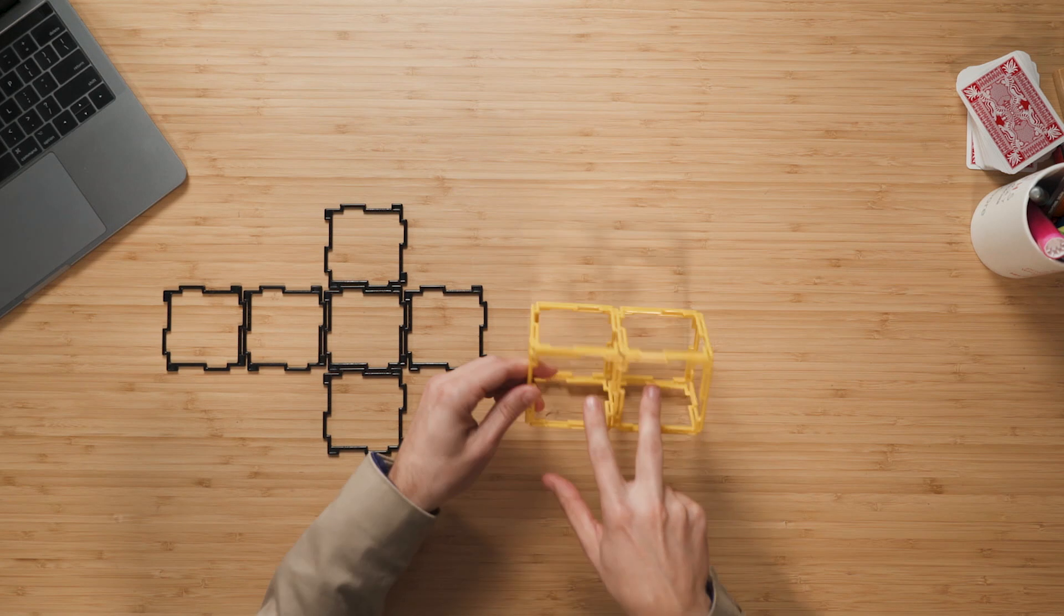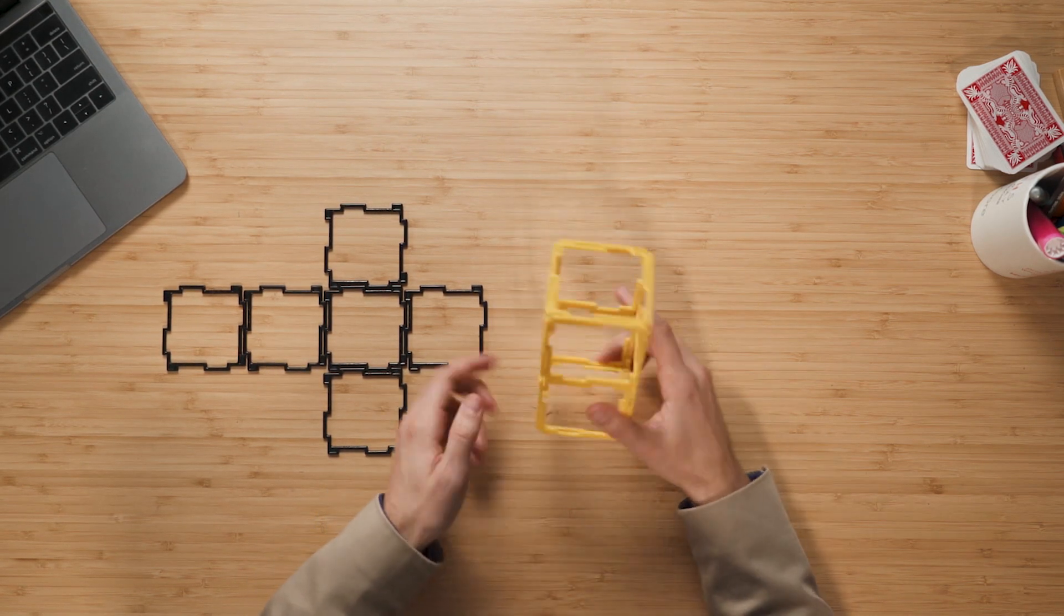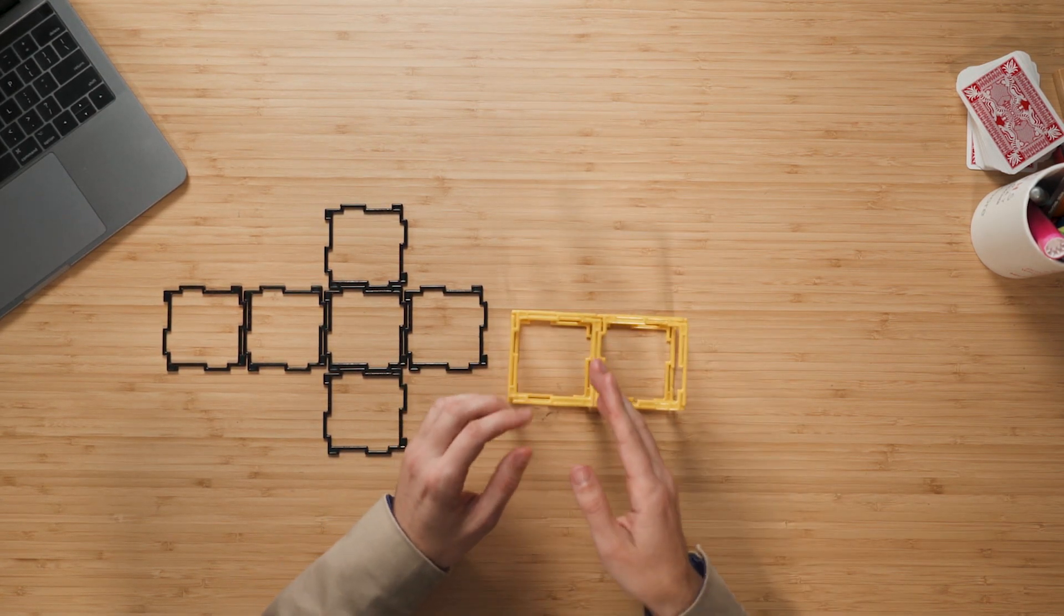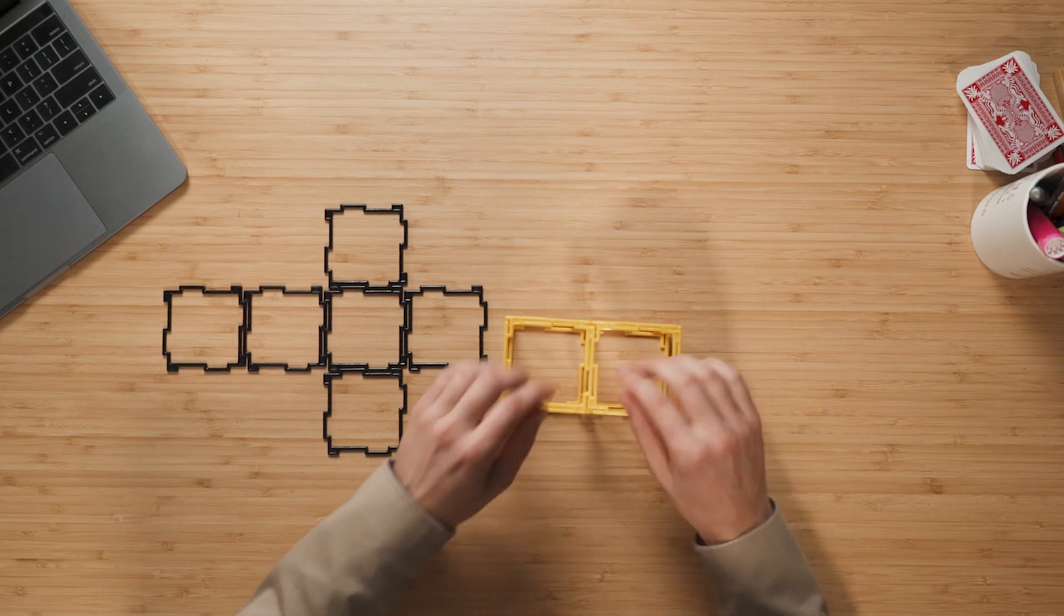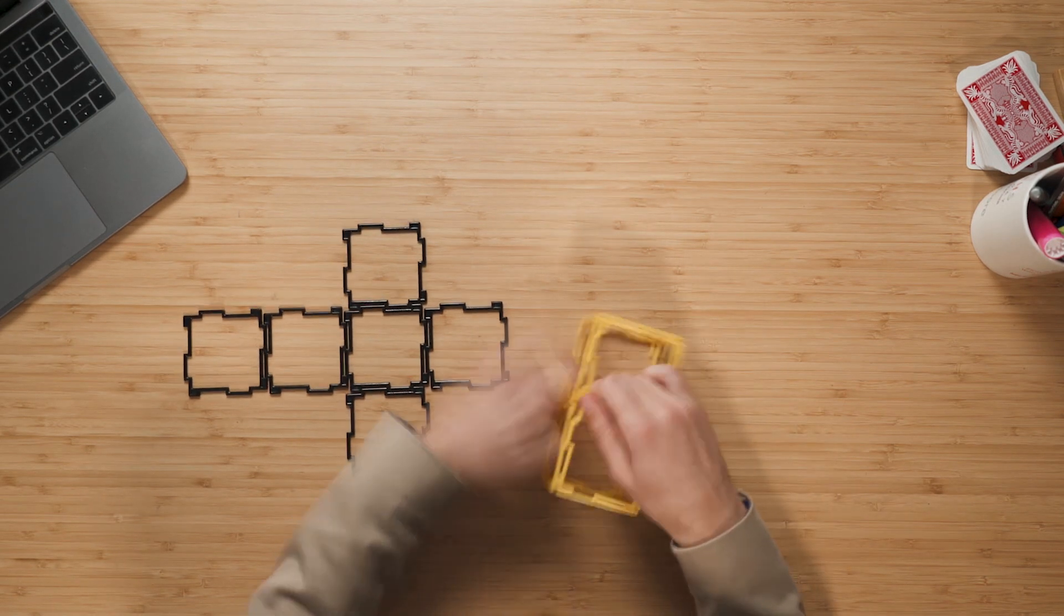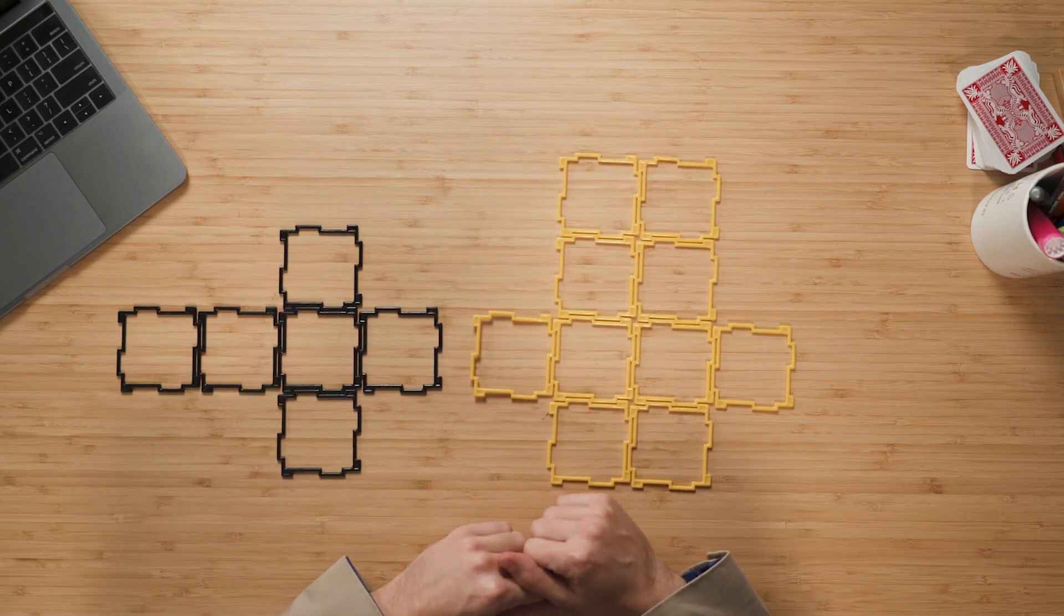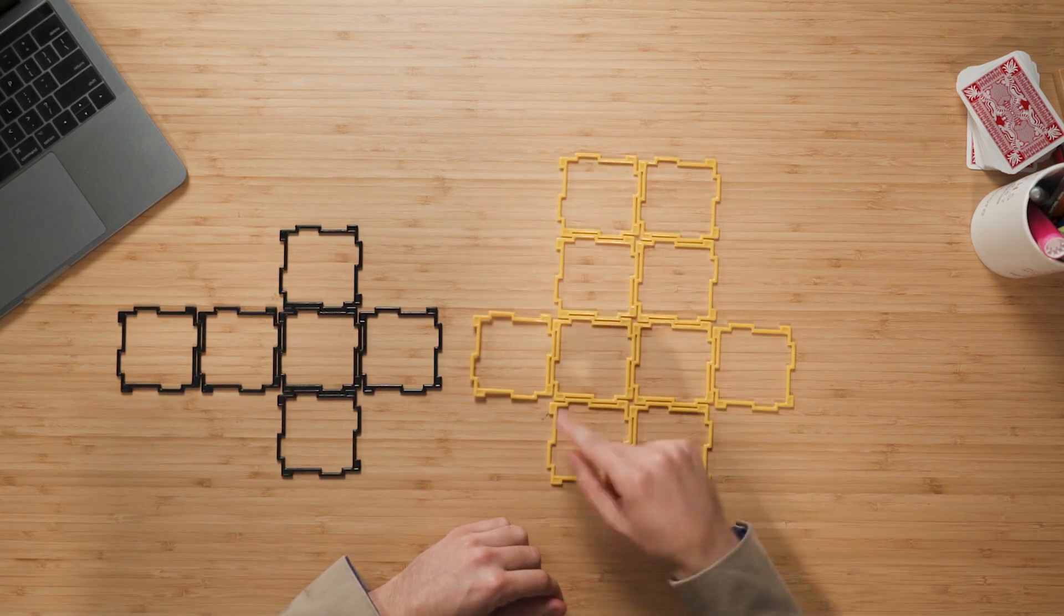Whereas a size two box has got two on each side and then one on the ends. It doesn't have the one in the middle because it needs to be able to connect. Now if I pull this apart, you'll see that it's made up of ten pieces.